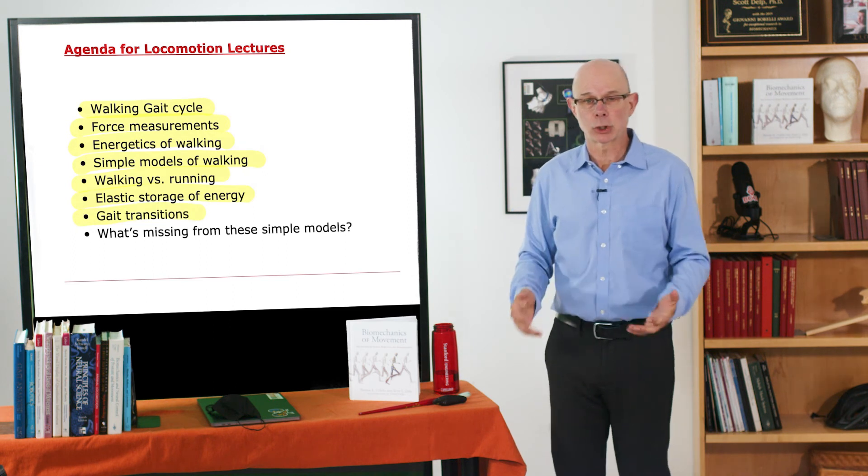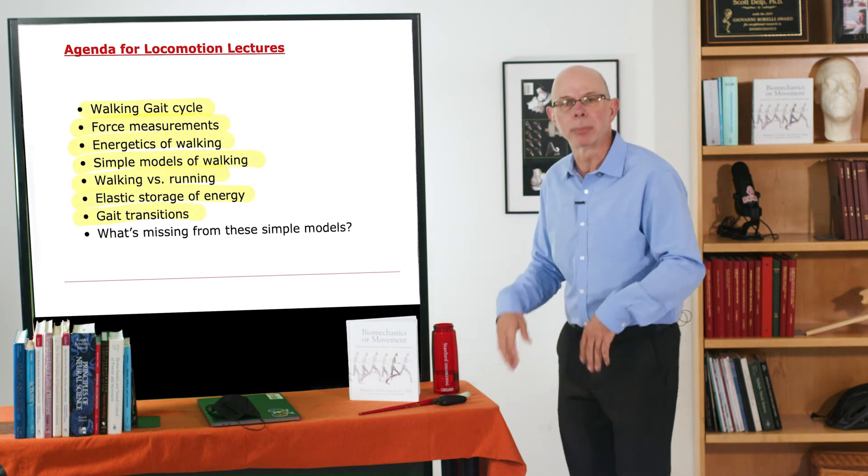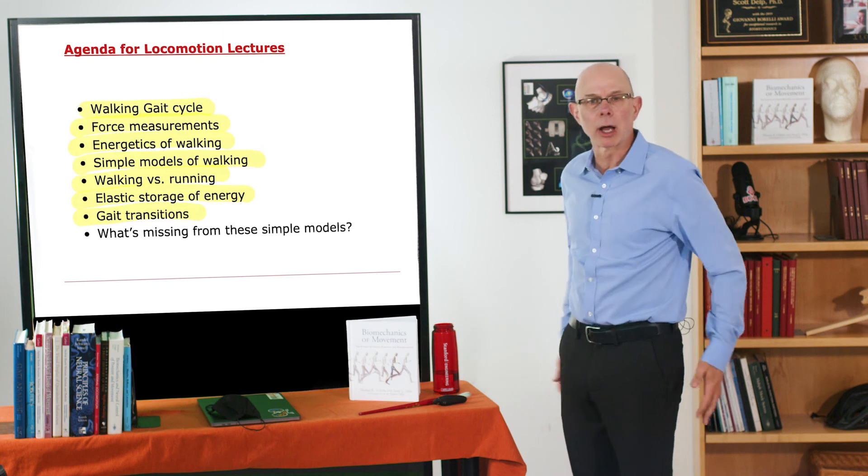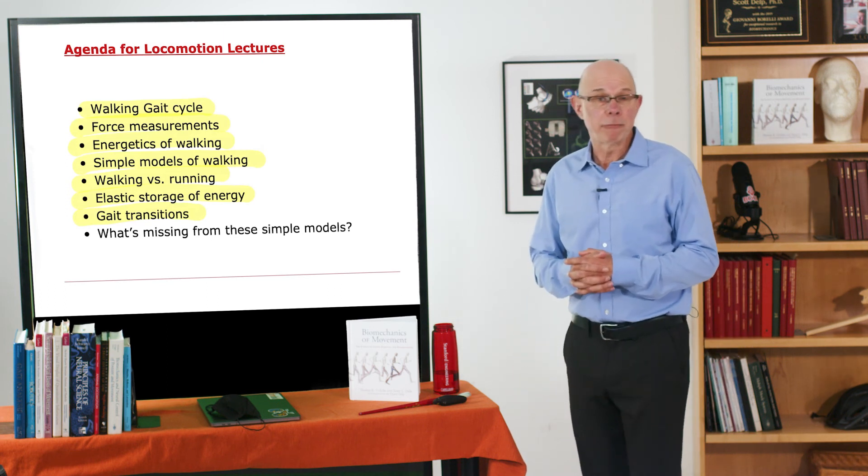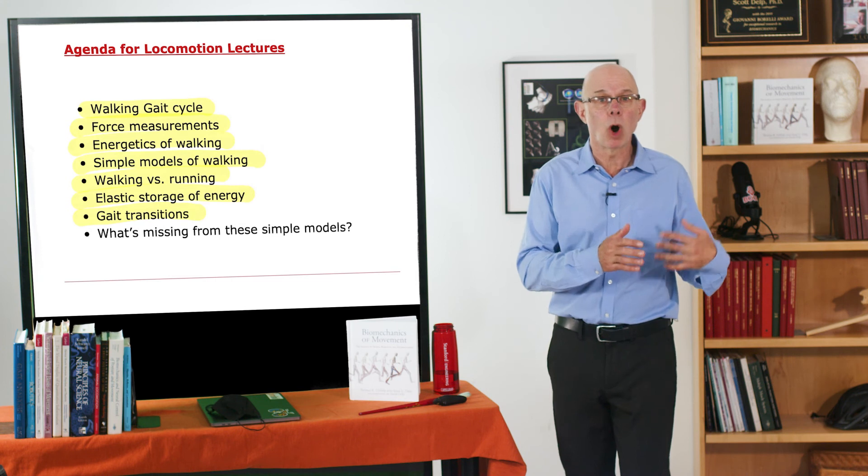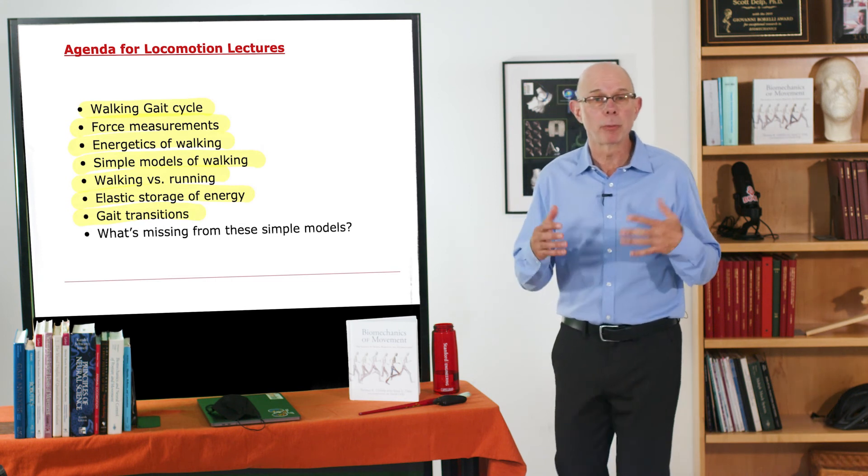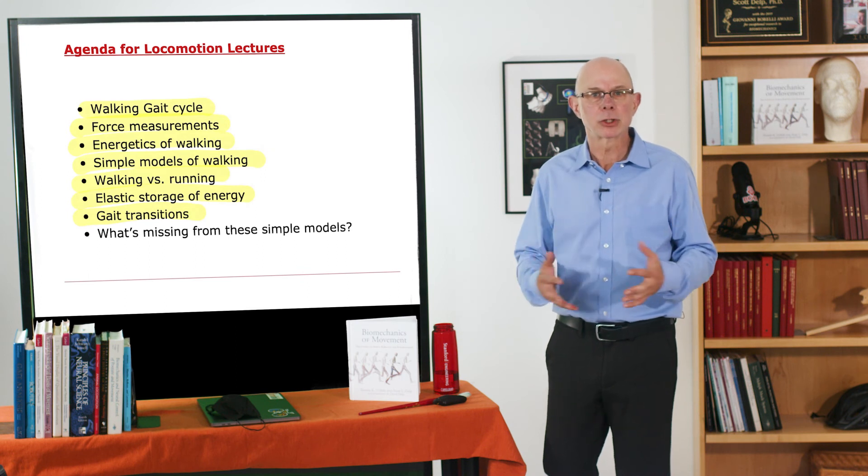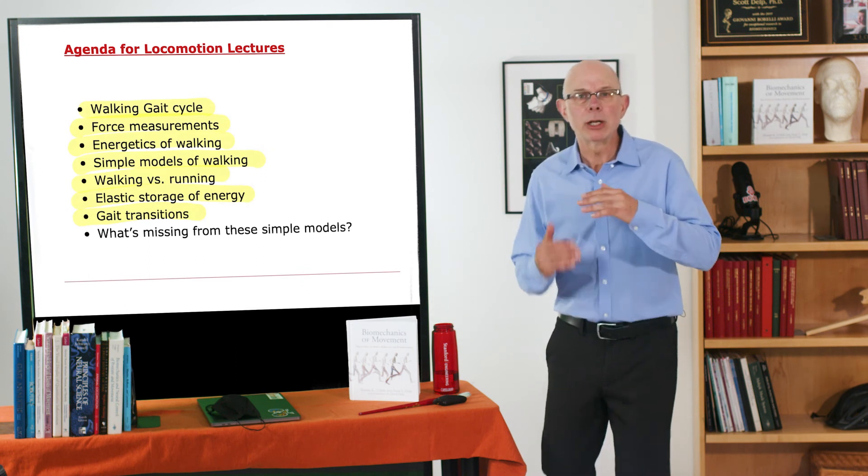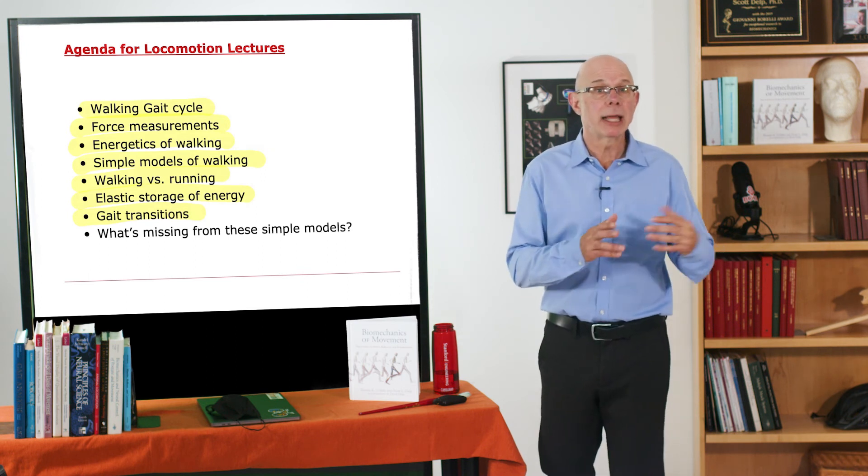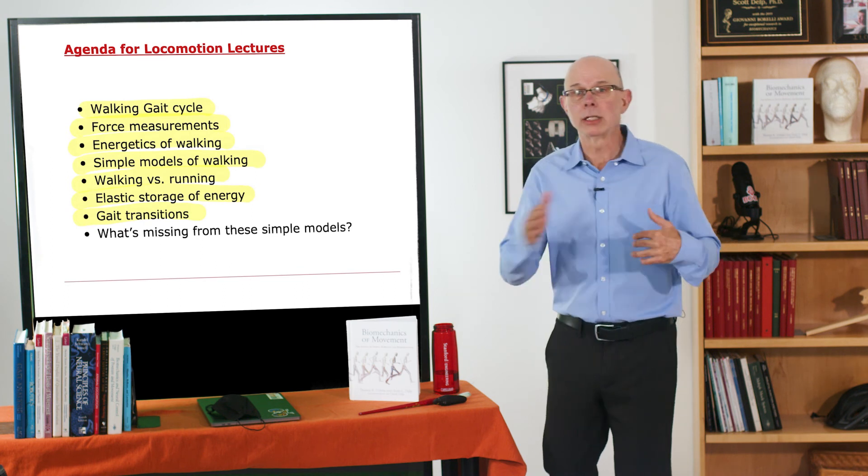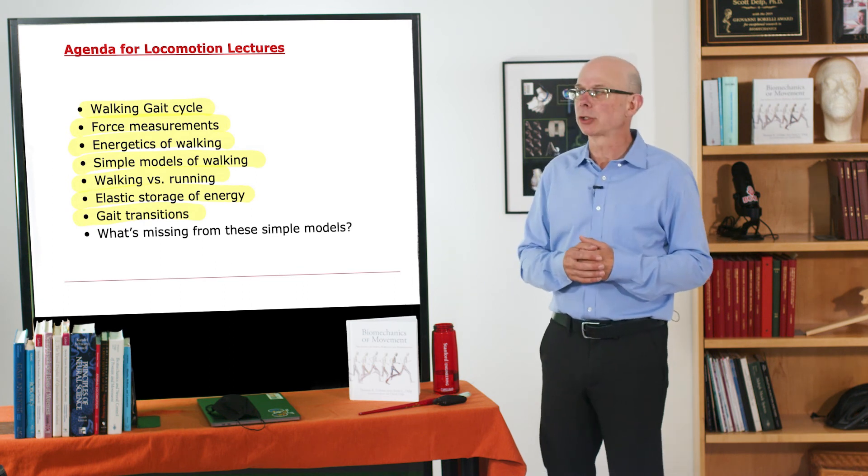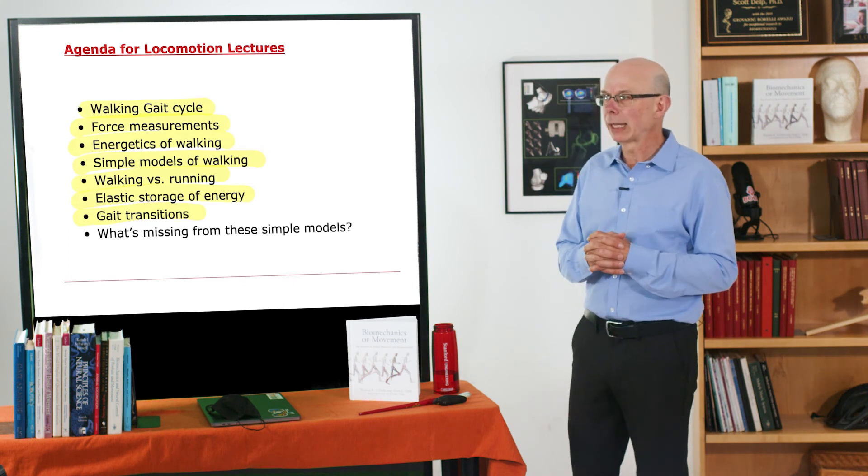For kangaroos, that's transitioning from a funny pentapedal gait where they use their forelimbs, their hind limbs, and tail. And for humans, it's the transition from walking to running. I'm sure you've all been in that scenario where you're walking, you want to go faster and faster, and you eventually break into a run. What's driving that transition from walking to running? We call that a gait transition. And we'll see what's driving that.